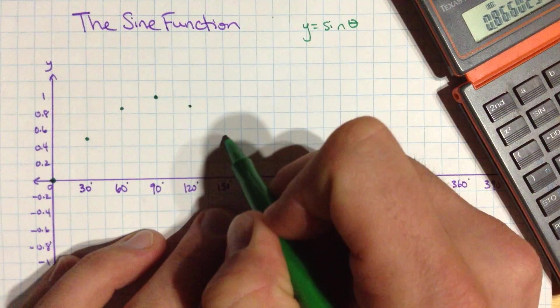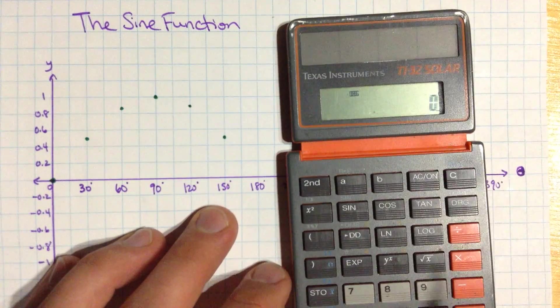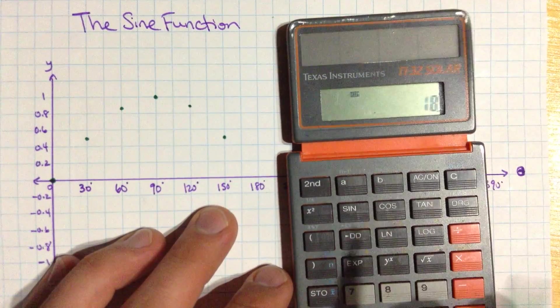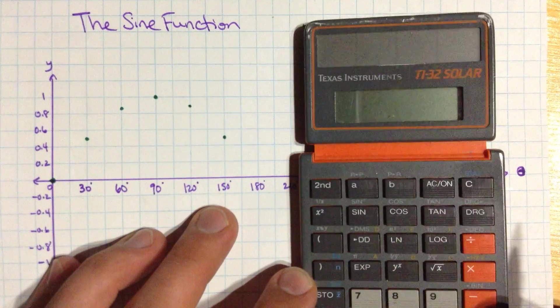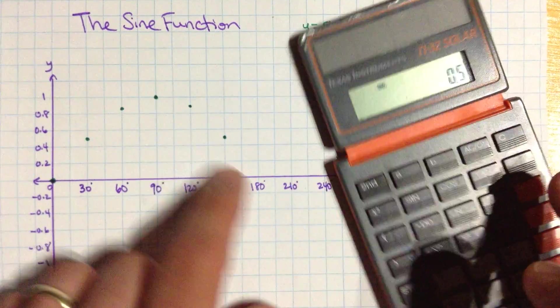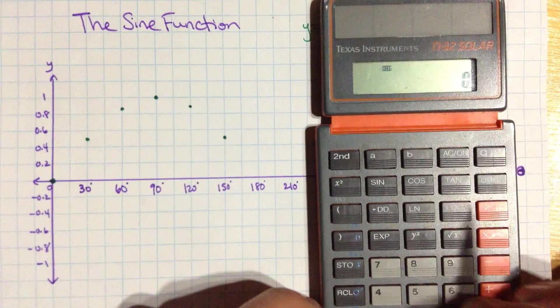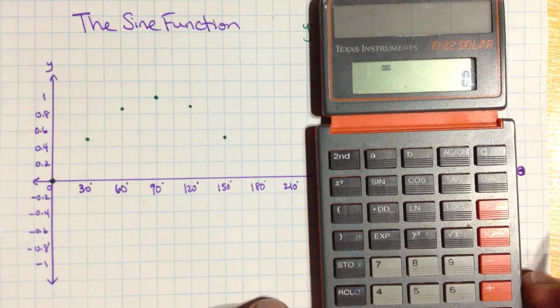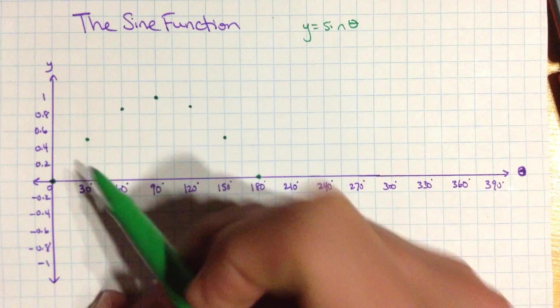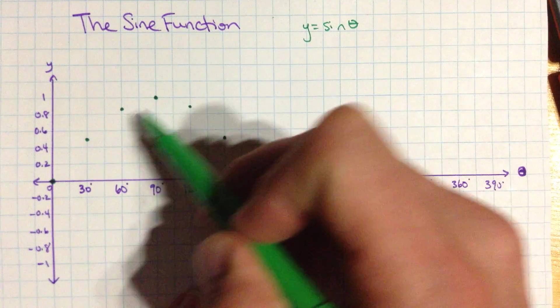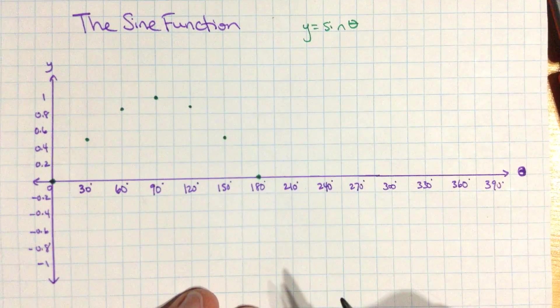So actually, I know that 150 is also going to be 0.5. We can just double-check that. 150 sine is also 0.5. So that's great. And then you might also realize then 180 gives us the sine value is 0. All right, so we have sort of this nice little hill here. That's the first part of the sine curve.